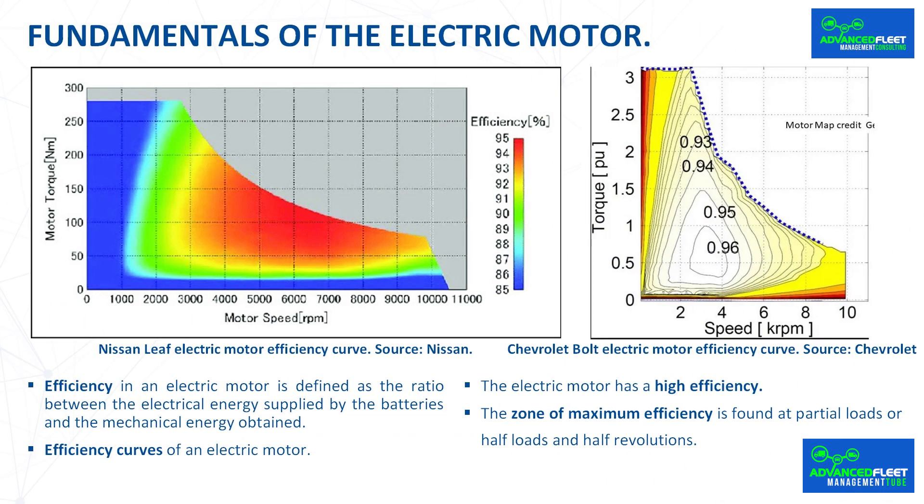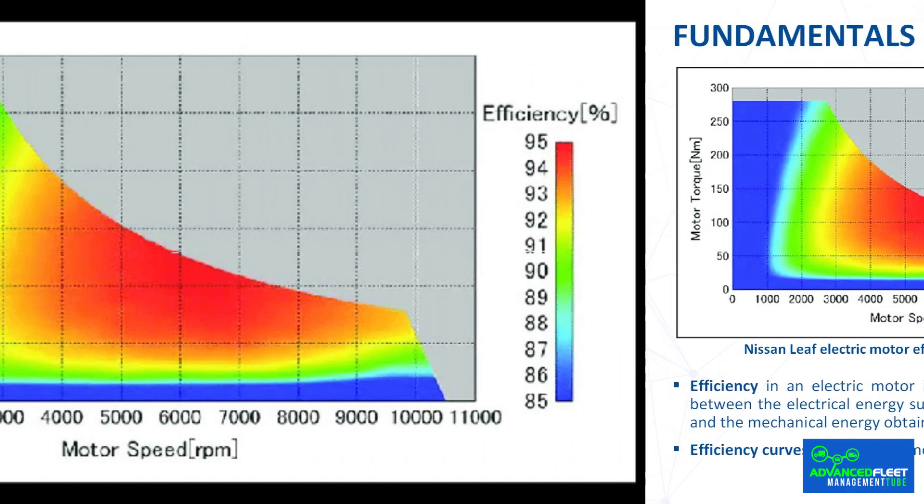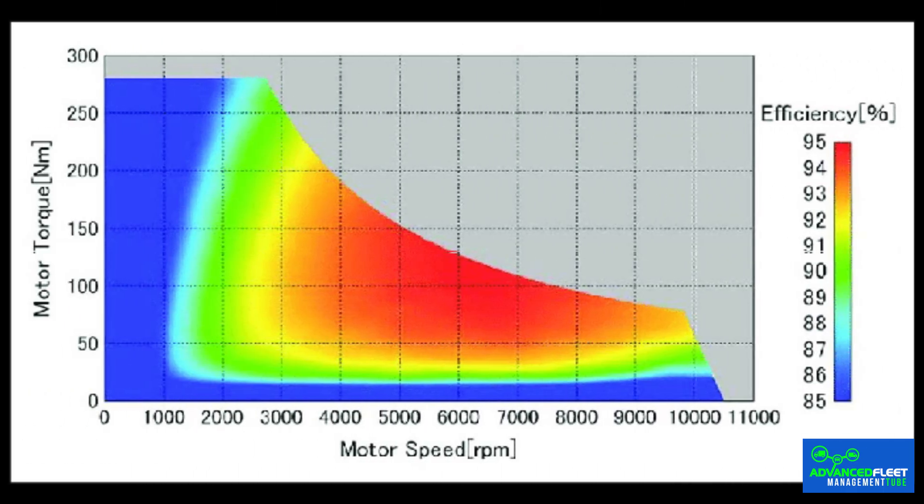Electric motor fundamentals. Efficiency in an electric motor is defined as the ratio between the electrical energy supplied by the batteries and the mechanical energy obtained. The efficiency losses are produced by the Joule effect by which if an electric current circulates in a conductor, part of the kinetic energy of the electrons is transformed into heat due to the collisions with the atoms of the conductor material through which they circulate raising the temperature of the same. Efficiency curves of an electric motor: the graphs show the efficiency curves of an electric motor. In the abscissa axis are the revolutions of the motor and in the ordinate axis is the motor torque.